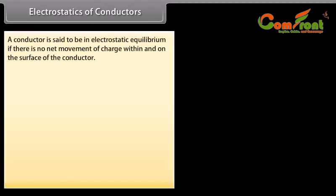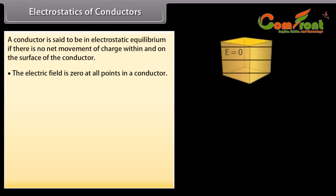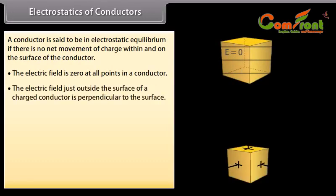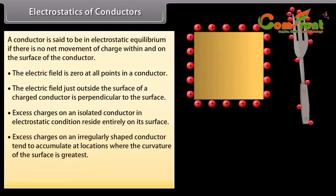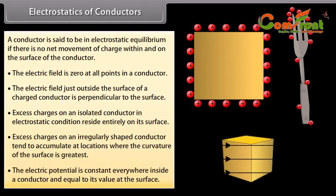Electrostatics of conductors. A conductor is said to be in electrostatic equilibrium if there is no net movement of charge within and on the surface of the conductor. The electric field is zero at all points in a conductor. The electric field just outside the surface of a charged conductor is perpendicular to the surface. Excess charges on an isolated conductor reside entirely on its surface, and tend to accumulate where the curvature of the surface is greatest. The electric potential is constant everywhere inside a conductor and equal to its value at the surface.